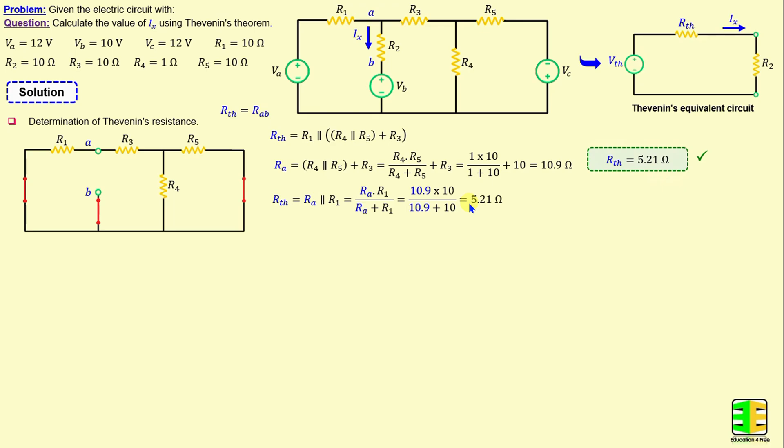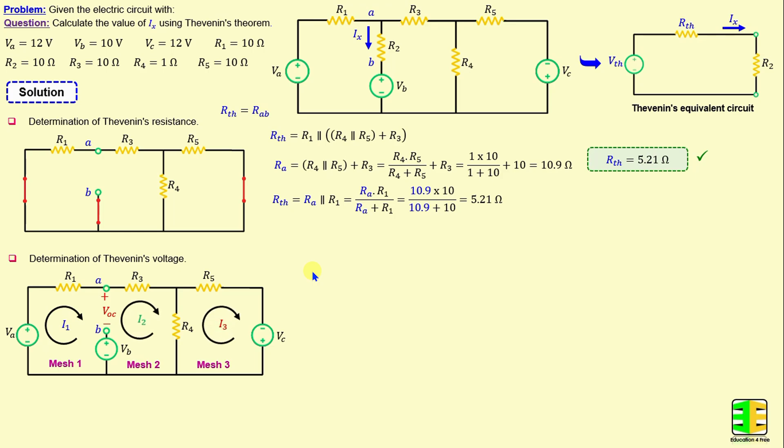After finishing the determination of Thevenin's resistance, we proceed to calculate Thevenin's voltage. The Thevenin's voltage is basically the open circuit voltage calculated between terminals A and B when R2 is disconnected. To find the open circuit voltage VOC, I will apply the mesh analysis method. I will consider this as mesh 1, this as mesh 2, and this as mesh 3, with I1 as the current in mesh 1, I2 in mesh 2, and I3 in mesh 3.